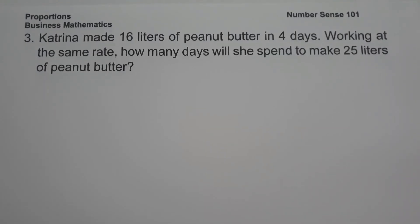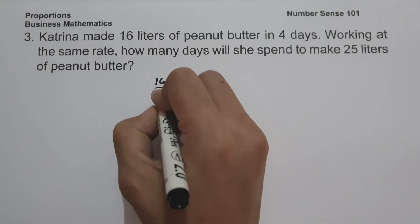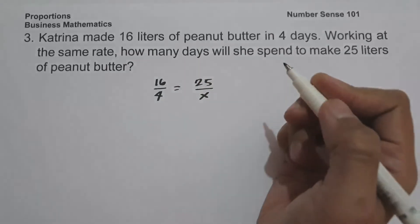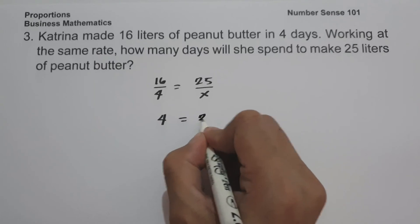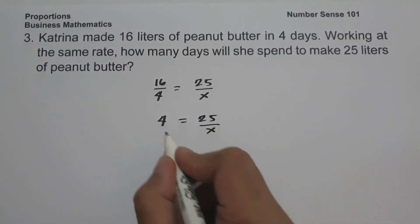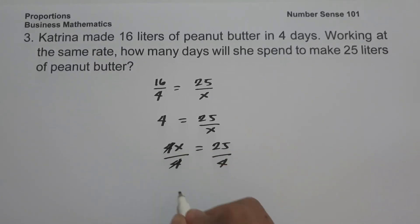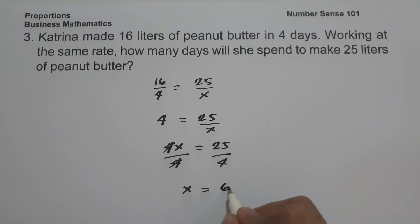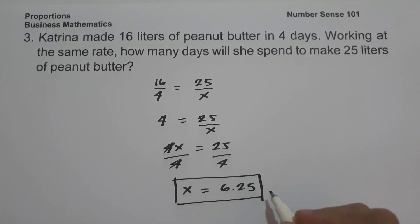On our last example: Katrina made 16 liters of peanut butter in 4 days. Working at the same rate, how many days will she need to make 25 liters? We write 16 over 4 equals 25 over x. Since 16 divided by 4 is 4, we have 4 equals 25 over x. Cross multiplying gives 4x equals 25. Dividing both sides by 4, x equals 25 over 4, which is 6.25. Therefore, Katrina needs 6.25 days to make 25 liters of peanut butter.